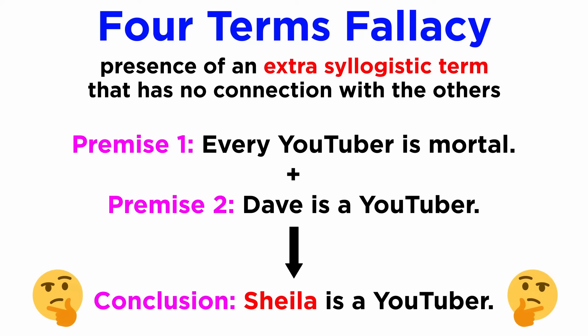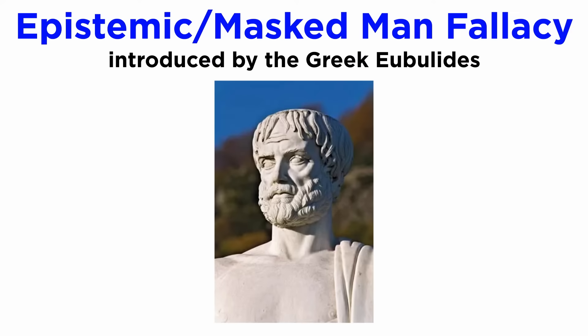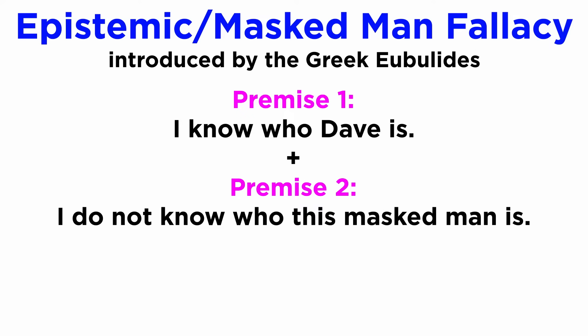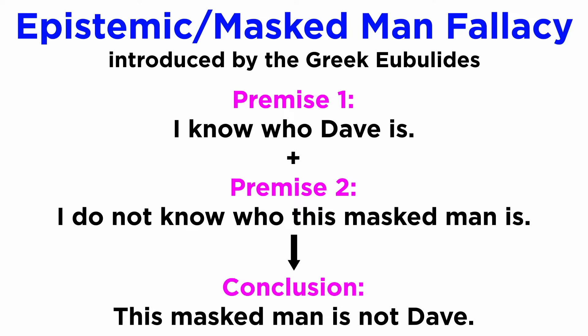Essentially, whenever you want to add an extra term to an argument, you either explain its connections to previous terms, or you'll be committing a fallacy. Another example is the epistemic fallacy, or the masked man fallacy, given its first formulation by the Greek Eubolides. An example of this would be: I know who Dave is. I do not know who this masked man is. Thus this masked man is not Dave.